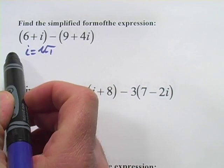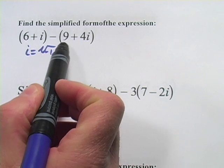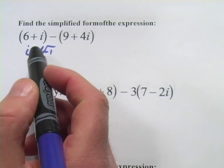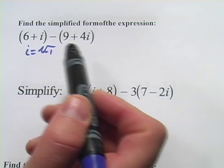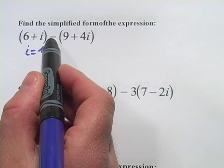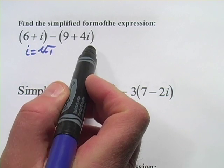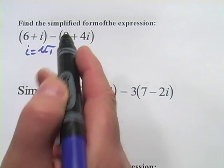Let's look at this first one. We have (6 + i) - (9 + 4i), and really the way to approach this is just like you would if the i was an x. We're going to distribute the negative sign through these parentheses, and then we're going to combine our like terms.